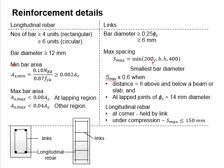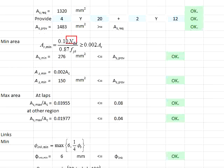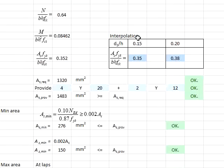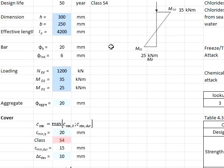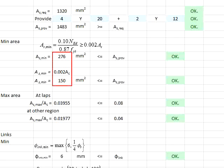Next, check for A_s minimum based on this formula. Substitute the values of N_ED and f_yk. You get A_s,min which needs to be greater than 0.002 times the area of the column. The column area is determined by multiplying b and h. This is the A_s,min obtained, and your provided area is greater than A_s,min. Therefore, the amount of reinforcement bar is satisfactory.